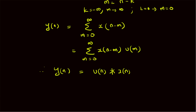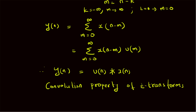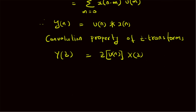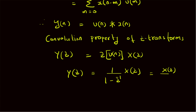Using the convolution property of Z-transforms, which states that convolution in the time domain is equivalent to multiplication in the Z-domain, the Z-transform of y(n), that is Y(z), will equal the Z-transform of u(n) multiplied by the Z-transform of the input x(n), that is X(z). Recall that the Z-transform of the unit step sequence is 1/(1 - z⁻¹), therefore the output Z-transform Y(z) = X(z) / (1 - z⁻¹).